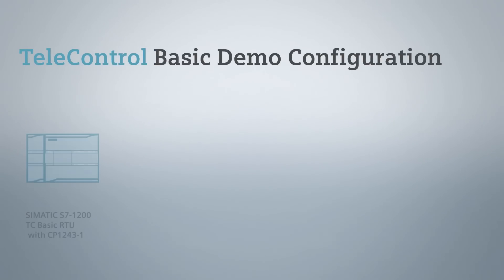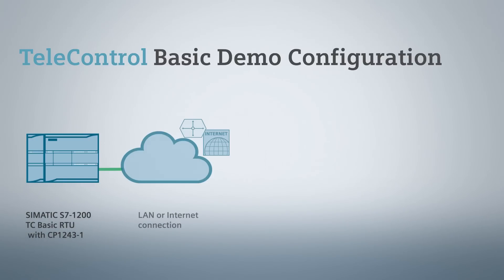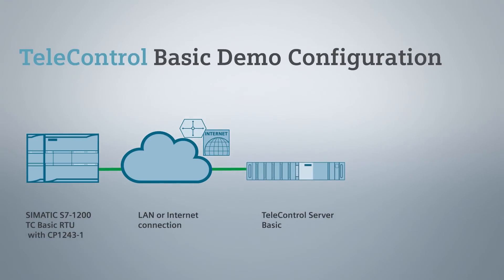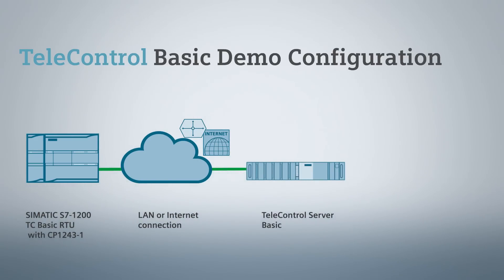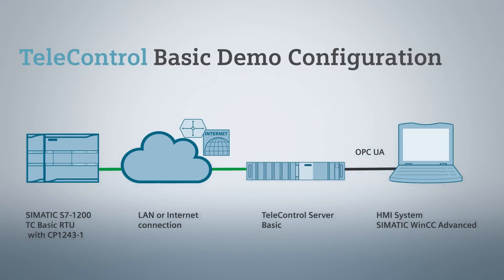Our demo configuration consists of an S7-1200 with WAN CP1243-1. The CP is coupled to the Telecontrol Server BASIC via a LAN or Internet connection. The Telecontrol Server BASIC can then transmit the data via OPC communication to an HMI system such as WinCC Advanced for visualization.